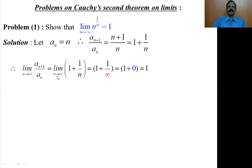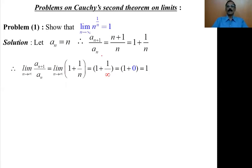Now we apply the limit. Since 1 is a constant, we write it as 1. When we apply the limit to the second term 1/n, as n tends to infinity, n is replaced by infinity. So it equals 1 plus 1/infinity. Since 1/infinity tends to 0, it is nothing but 1 plus 0, which equals 1.